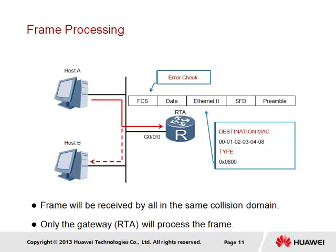If all is well, the destination MAC address is checked against the MAC address of the interface, which in this case is interface Gigabit Ethernet 0/0/0. Once confirmed that the destination MAC address and the interface MAC address are the same, the frame header is discarded and the packet is forwarded to the protocol listed in the frame type field, which happens to be the Internet Protocol, or IP.